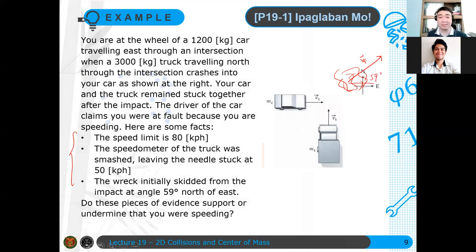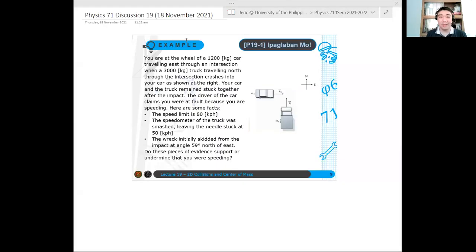Now, the question is, do these pieces of evidence support or undermine that you were over speeding? So the question now is, were you over speeding or not? I'll explain the problem. Maybe I'll give you a minute to think of the solution to this problem. This is basically a collision in 2D problem. And I'll show you the solution after.